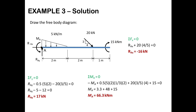Applying the third equation, summation of MA equal to zero, with anticlockwise negative and clockwise positive: −MA + (½ × 5 × 2) × (⅓ × 2) + (20 × 3/5) × 4 + 15 = 0. Solving gives MA = 66.3 kNm. So we have found all three reactions: RAX = −16 kN, RAY = 17 kN, and MA = 66.3 kNm. Hope you enjoyed this session — if you liked it, please subscribe to the channel. Thank you.